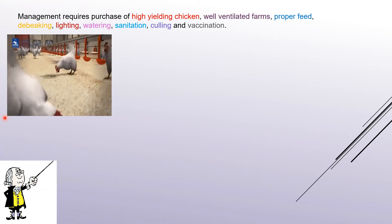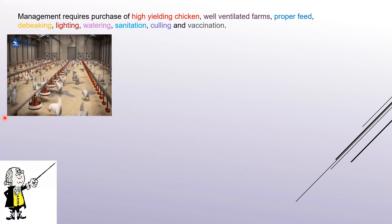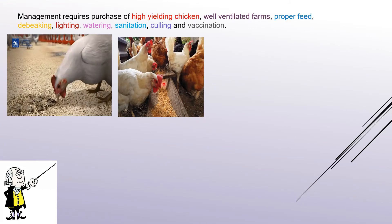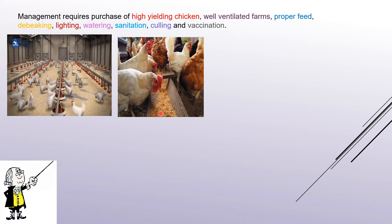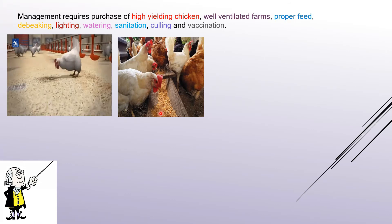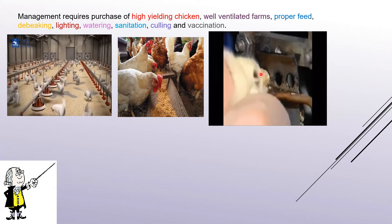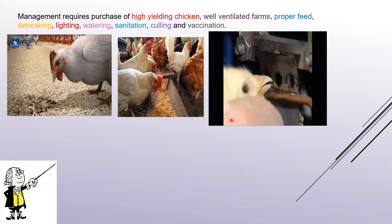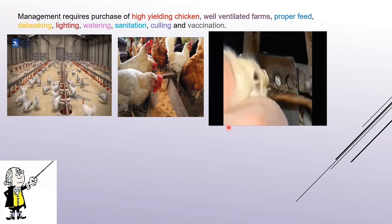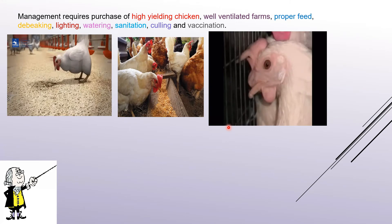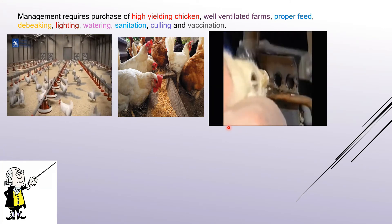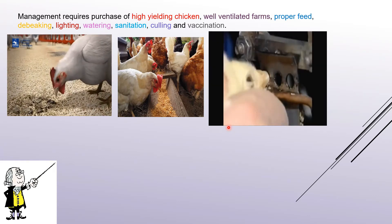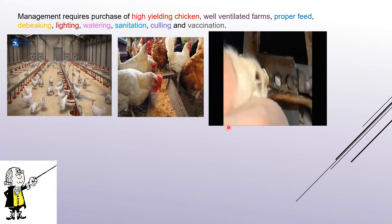The birds do not require a claustrophobic space; otherwise they will fall sick and your business will be at a loss. Provide proper feed of good quality, thoroughly checked — you can even add proper medicines into it. The third important thing is debeaking, where the beaks are removed. This is necessary because birds staying in a group have the habit of hitting each other with their beaks, which can harm smaller or younger birds.